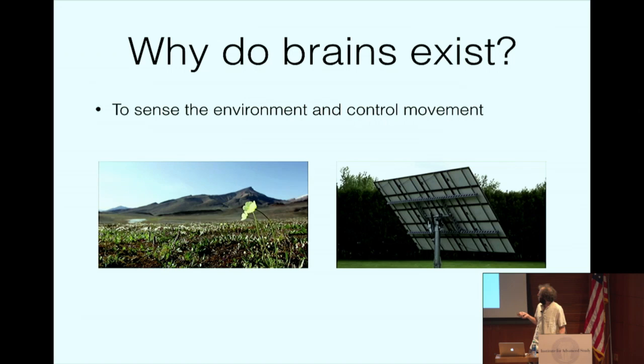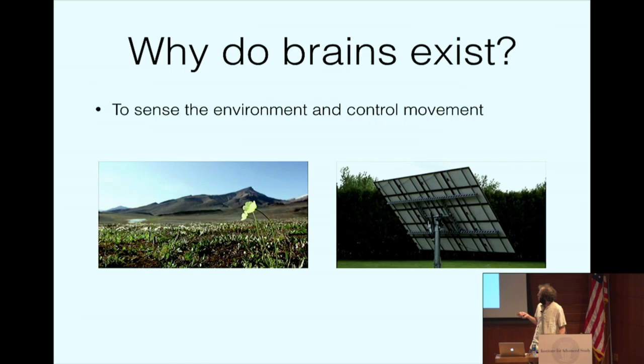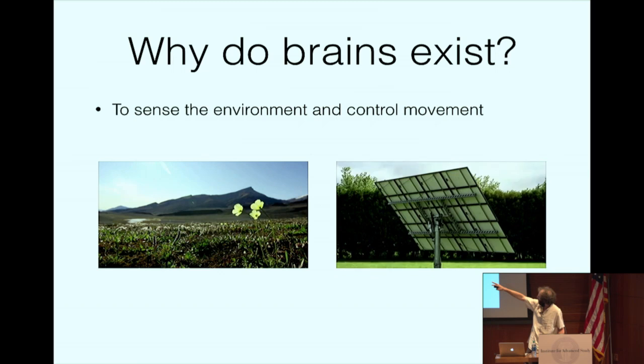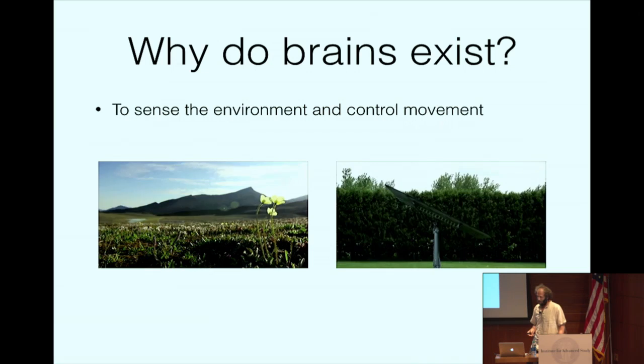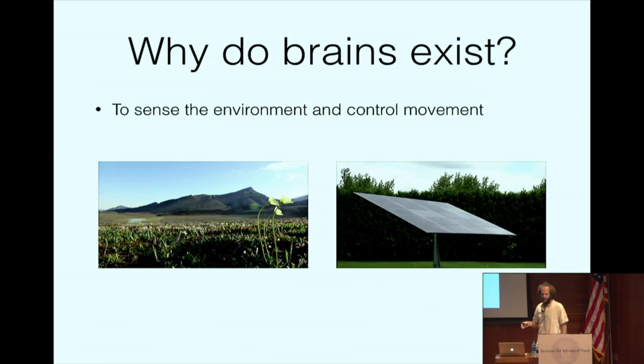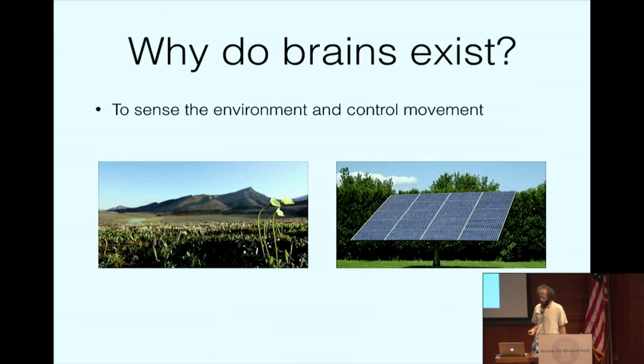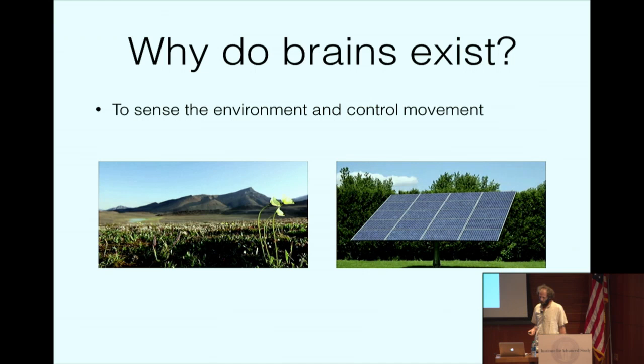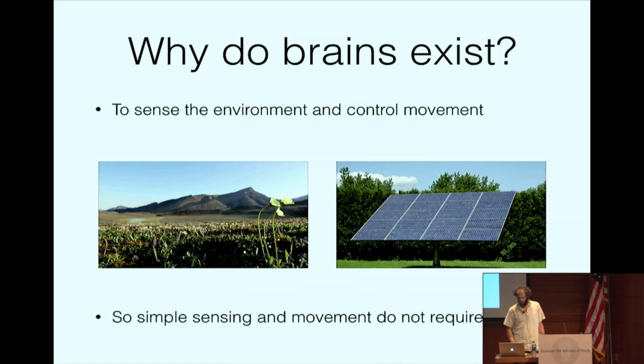Then the next question we should ask is, why do brains exist? The simple answer would be to sense the environment and control movement. But here you can see these flowers. This is a time-lapse video. The sun is just coming into view. They track the sun as it's moving in the sky. And they move. They actually physically move. So they're both sensing and moving. And if you think in the computer side of this, you wouldn't need a supercomputer in order to do something similar artificially, like control of this solar panel, which needs to have maximum sunlight during the day. So simple sensing and simple movements don't require a brain.